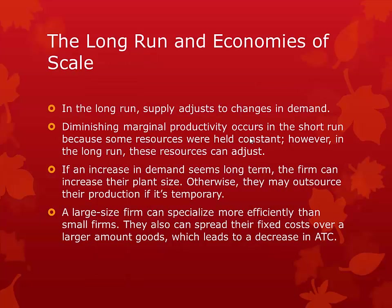Remember that these cost curves are only for the short run. Variable costs will increase because the fixed inputs never change, so it becomes inefficient. However, in the long run, supply will adjust to changes in demand by changing some of the fixed inputs. If a firm thinks that the increase in demand for a good is long-term, they can increase their plant size. Otherwise, they can outsource production if it's just a temporary increase in demand. A large-sized firm can specialize more efficiently than a small firm, and can also spread fixed costs over more goods, giving them lower average total costs. This is known as economies of scale.